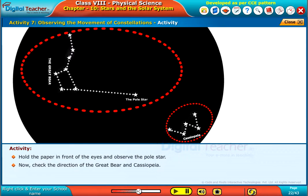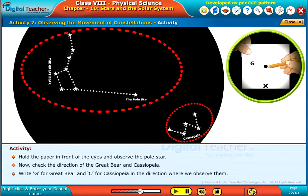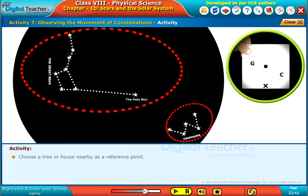Now check the direction of the Great Bear and Cassiopeia. Write G for Great Bear and C for Cassiopeia in the direction where we observe them.